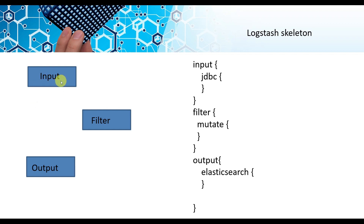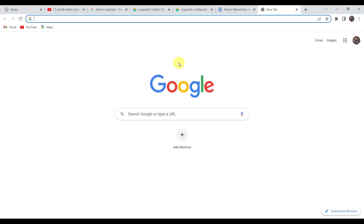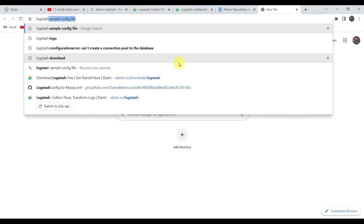The Logstash skeleton has three simple building blocks. First is the input, where we define what the input of the system is — in our case it is MySQL. Then there is a filter, which is the business logic we apply, like what fields or metadata are going to change. In the output section we migrate data to Elasticsearch, so Elasticsearch connection details go there. In the JDBC section you give database connection details, and the whole job of data transformation is done by Logstash.